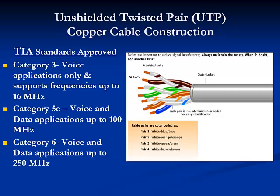The TIA-EIA standards call for the following minimum performance for unshielded twisted-pair copper cable with 100-ohm impedance. Category 3 is limited to voice applications and supports frequencies up to 16 MHz. Category 5E can be used in voice and data applications up to 100 MHz, and Category 6 has voice and data applications up to 250 MHz.